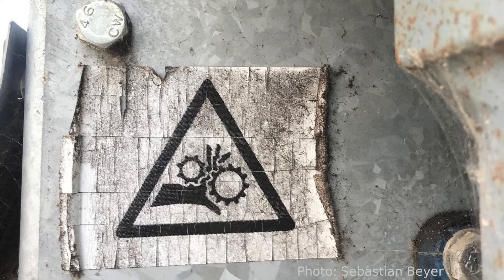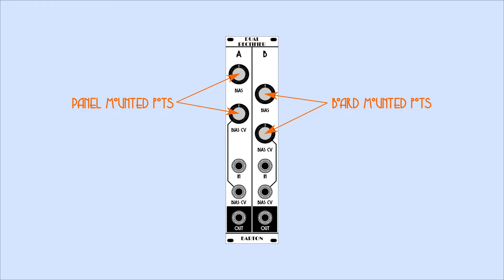So instead of board mounting all four, I board mounted two of them and then the other two I made panel mounted and ran wires from them to the footprints on the circuit board in order to spread these knobs out a little bit more.